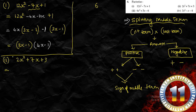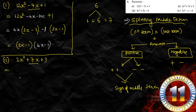So we split the middle term: instead of 7x we write plus x plus 6x. Now we have 4 terms. Taking the first two: x is common in 2x² and x, giving x(2x + 1). For the last two terms, 6x and 3: 3 is common, giving 3(2x + 1). Since 2x + 1 is common in both groups, we take it out.